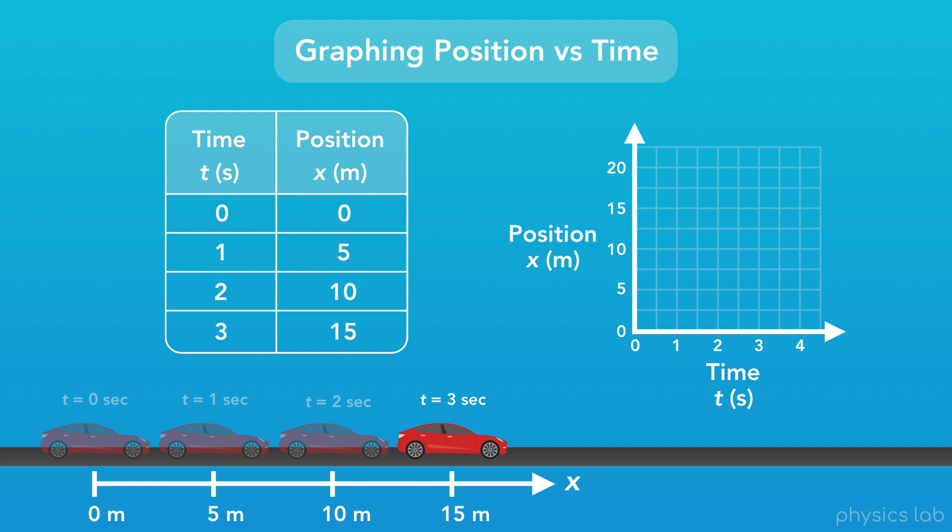So how do we graph the position of this car over time? We start by plotting the points that we have in the table on the left. When time equals 0 seconds, the position of the car is 0 meters, so we'll plot that point on the graph, where time is 0 and position is 0.